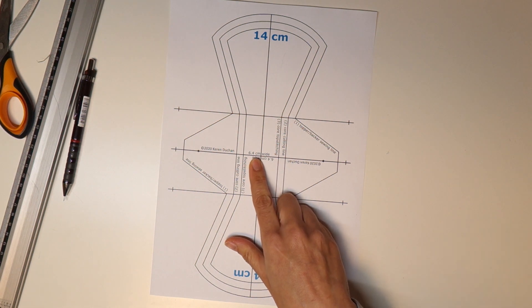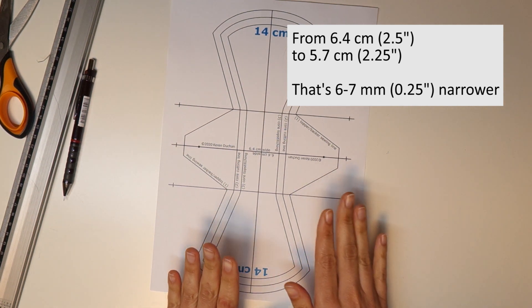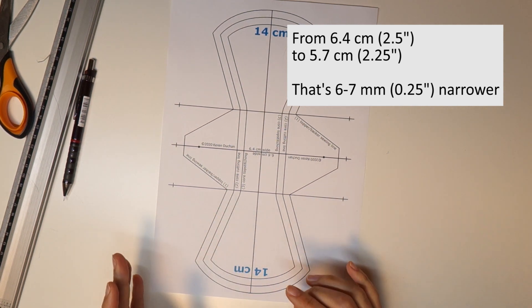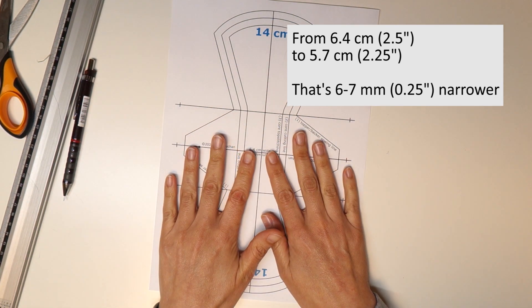Now let's take this same width pad, 6.4 centimeters or two and a half inches, and convert it into a narrower pad. So two and a quarter inches. Of course you can choose how narrow or wide you want your pad to change to.